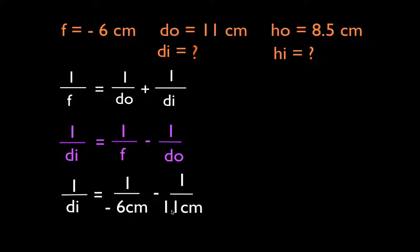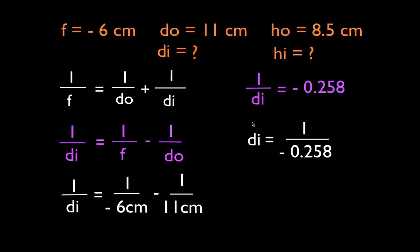You can simply do this on your calculator: 1 divided by negative 6 minus 1 divided by 11. With a graphing calculator, you'll get that 1 over DI is equal to negative 0.258. Remember, a lot of people have a problem with this — this is not the DI; this is 1 over the DI. In order to get the DI, we have to take the reciprocal of both sides, giving us DI equals 1 over negative 0.258.